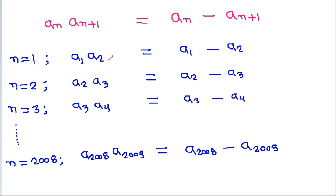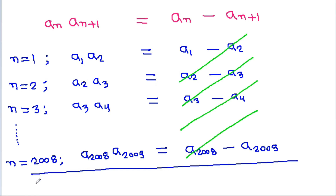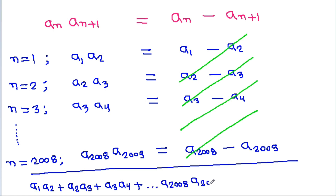If we add all equations, then a_2 will get cancelled, a_3 will get cancelled, a_4 will get cancelled, and in the same way a_{2008} will get cancelled. We will get a_1·a_2 + a_2·a_3 + a_3·a_4 + up to a_{2008}·a_{2009} is equal to a_1 minus a_{2009}.